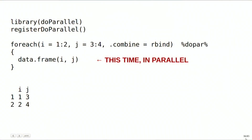A user can then register a particular parallel adapter package — in this case, doParallel — with a registration function. dopar sees that through a hidden global variable. Now the loop, without changing the code in any way, runs and gives you the same answer, but this time it's run in parallel. Two separate R processes were started for each loop iteration, and their output was combined through rbind to give you the same result.